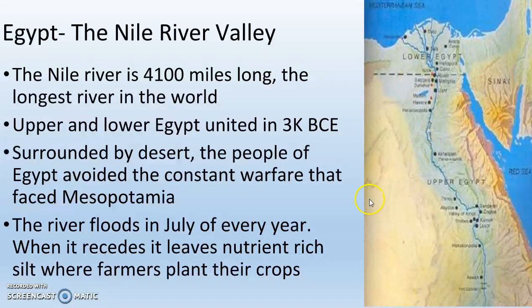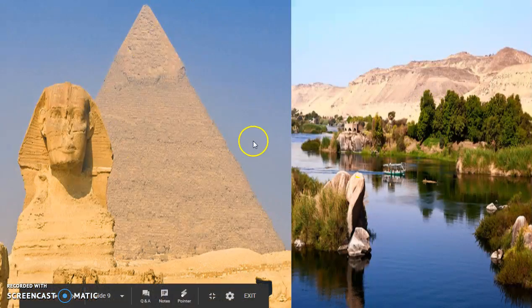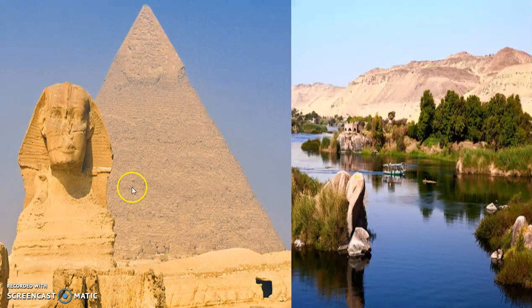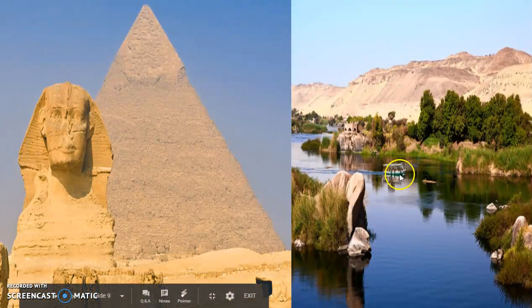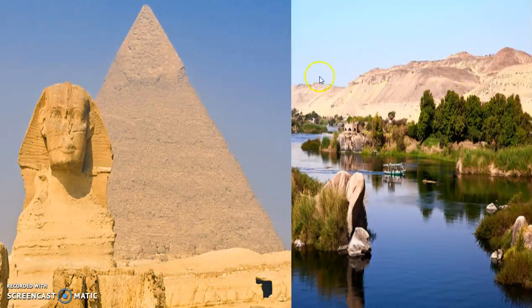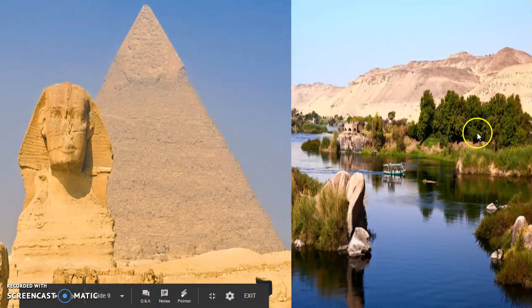The Nile River floods in July of every year. When those waters recede, it leaves a nutrient-rich soil called silt. It is in the silt on the banks of the river where farmers plant their crops. On the left we have a picture of one of the pyramids as well as the Sphinx. Over here we have the Nile River — we can see all this green lush vegetation where crops are planted, and then desert right beside it. It's a very stark comparison, and this happens because of the nutrient-rich silt of the Nile River.